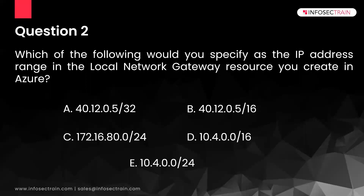The options are: A) 40.12.0.5/32, B) 40.12.0.5/16, C) 172.16.80.0/24, D) 10.4.0.0/16, and E) 10.4.0.0/24. Out of these, what is the IP address range you are going to specify in your local network gateway resource?